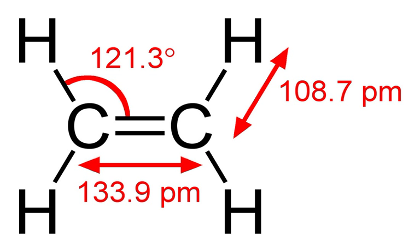Ethylene is a hydrocarbon with the formula C2H4, or H2C=CH2. It is a colorless, flammable gas with a faint, sweet and musky odor when pure. It is the simplest alkene. Ethylene is widely used in the chemical industry, and its worldwide production exceeded 150 million tons in 2016, surpassing that of any other organic compound.